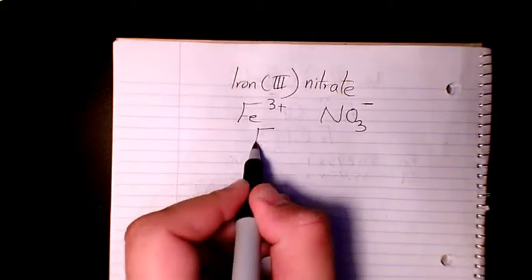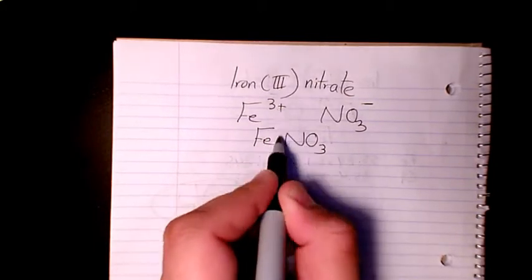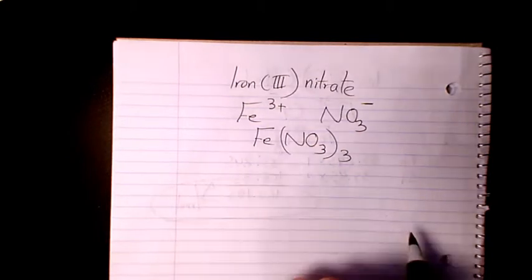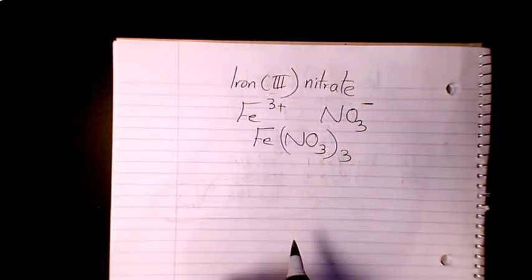So then it will be Fe and NO3. The charge here, three, is gonna sit here and one is gonna go and sit here. So then the molecular formula is gonna be Fe(NO3)3.